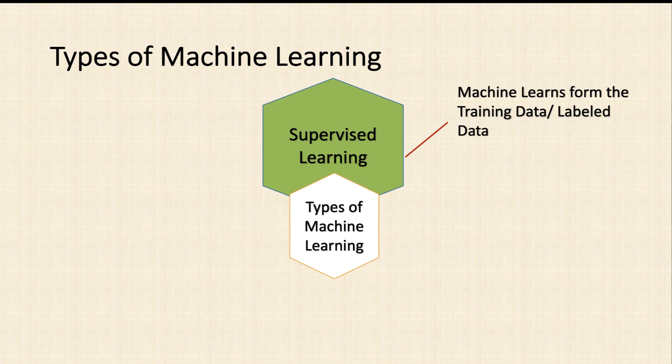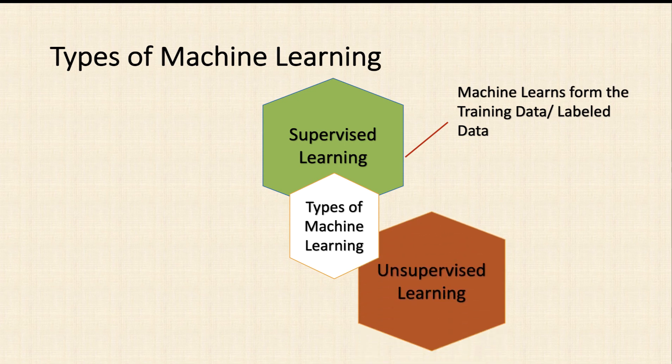In supervised learning, the machine learns from training data, or we have data which is labeled. For example, if we have a cat and a dog and we train our model to classify between cats and dogs, the data is already labeled. Then your machine is able to predict the particular input pattern. The main thing to remember is that in supervised learning you must have labeled data.